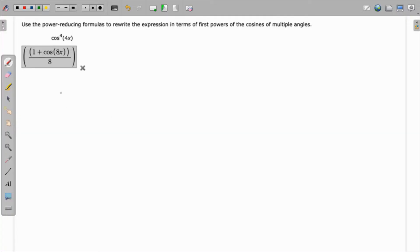In this question, we have to use the power reducing formulas to rewrite the expression in terms of the first power of cosine of multiple angles. We'll use the corollary of the double angle identity.